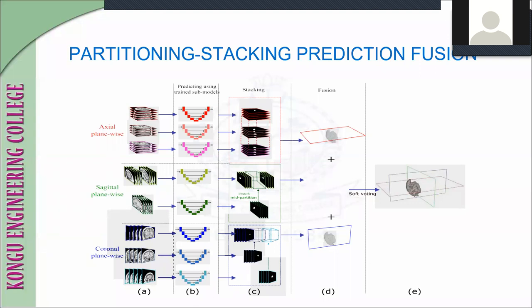These are the parts of the stacking prediction process. First, images are sliced into three plane-wise directions. After that, images are predicted and arranged using the stacking process. Finally, we get the soft voting technique to find where the brain stroke has occurred.